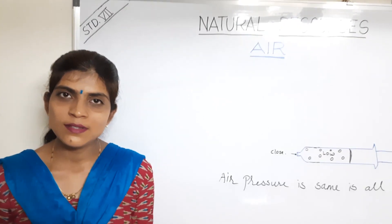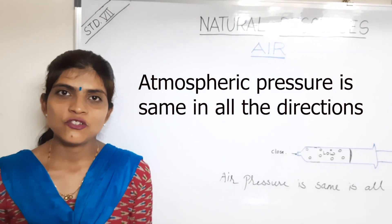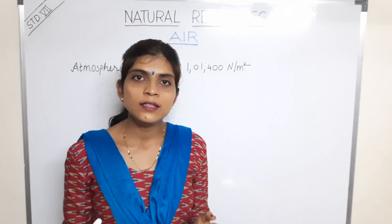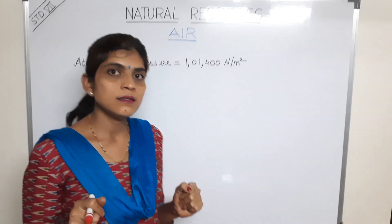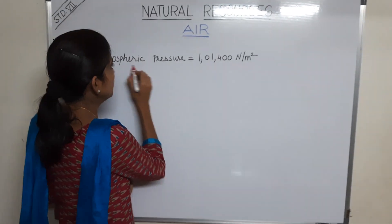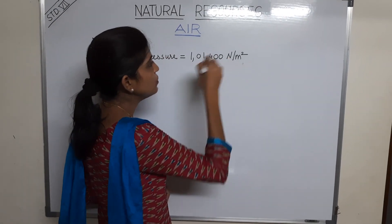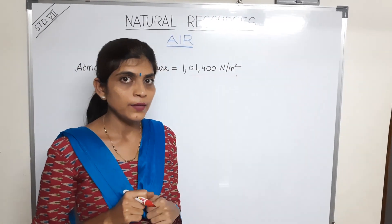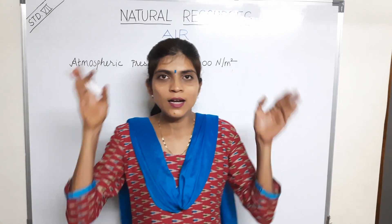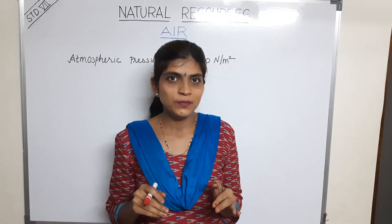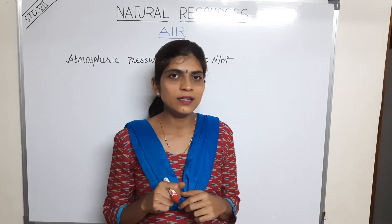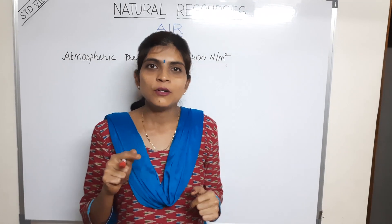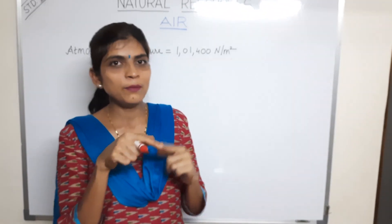So what does this experiment prove? Air pressure is same in all directions. At ordinary conditions, atmospheric pressure at sea level is 1,400,000 Newton per meter square, which is almost equal to the mass of one car — like holding a car on your head all the time. So you must be wondering why don't we feel such a huge atmospheric pressure? Because atmospheric pressure is the same in all directions.